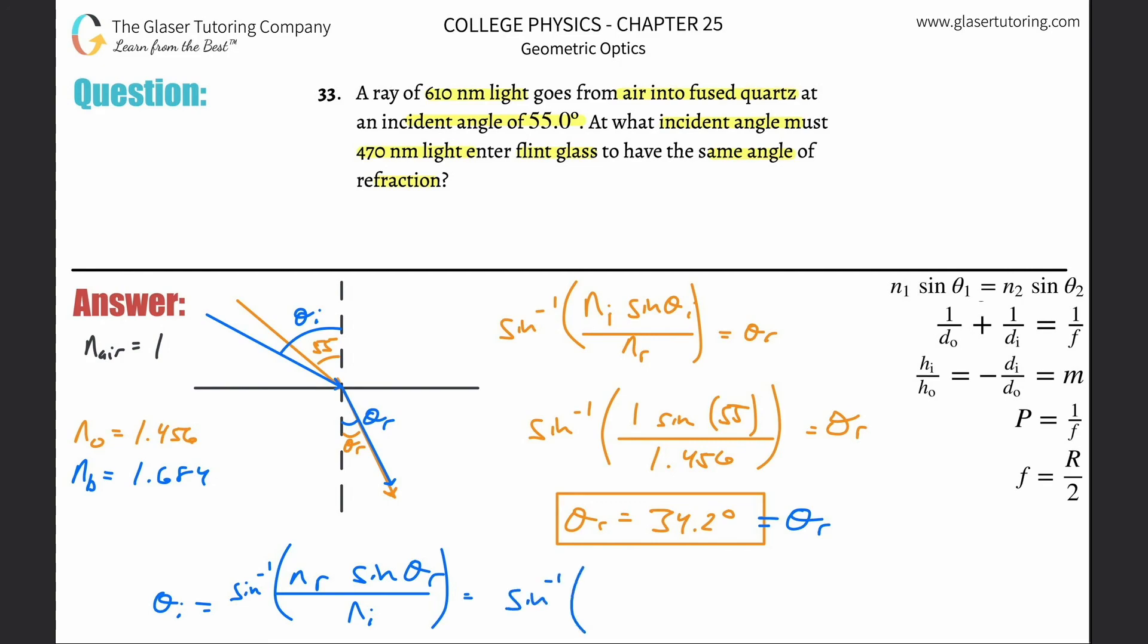All we need to do is plug in the values. Inverse sine of the index of refraction for the refracted ray. Remember, this is flint glass, so the value for blue light is 1.684, multiplied by the angle of refraction which is the same as we calculated before, 34.2. I'm going to use the exact number when I plug it in. The index of refraction for the incident ray is still air, so that's 1.